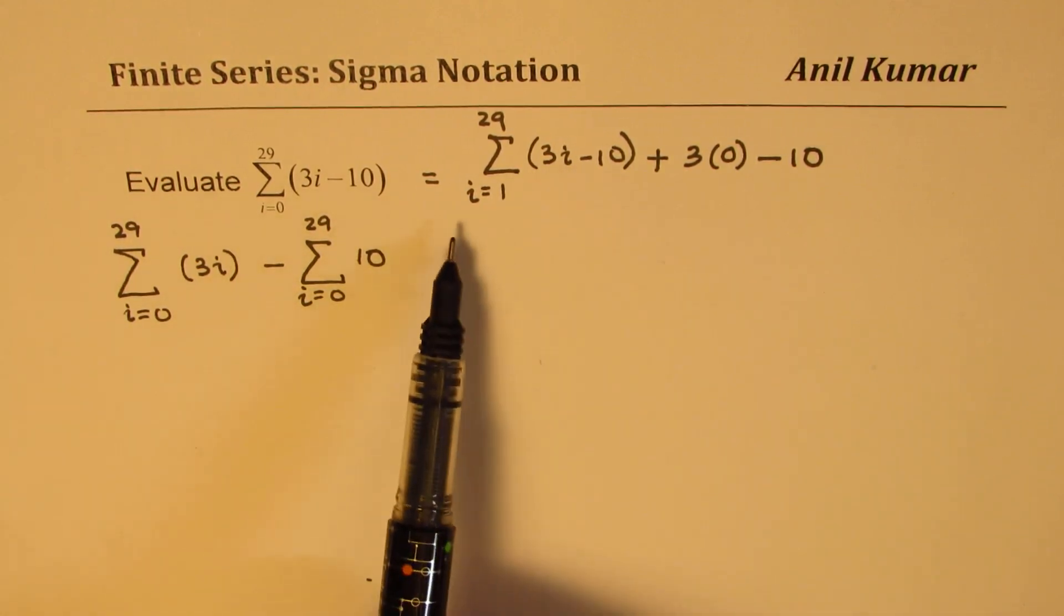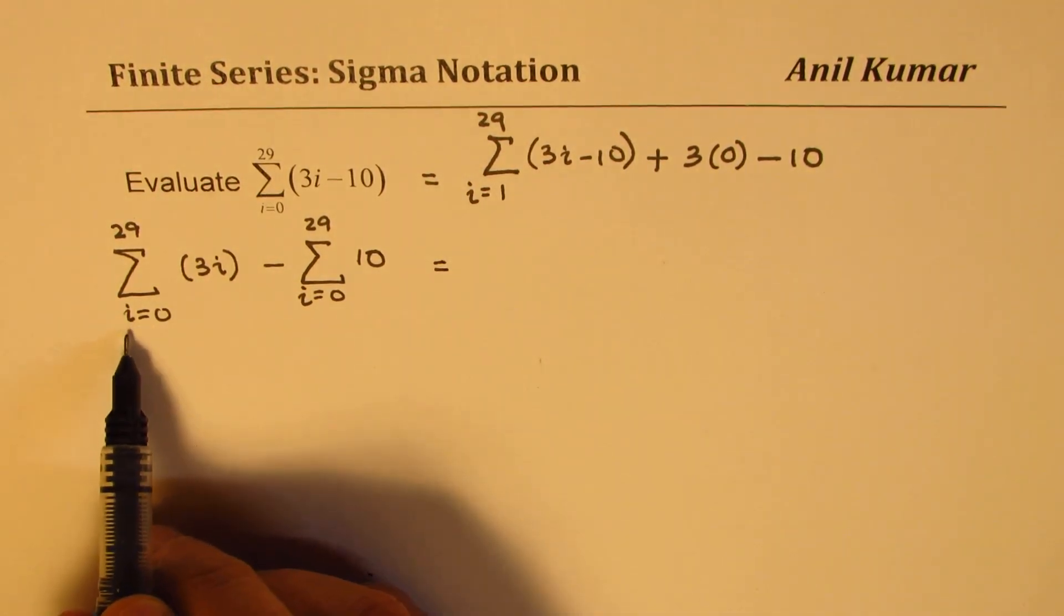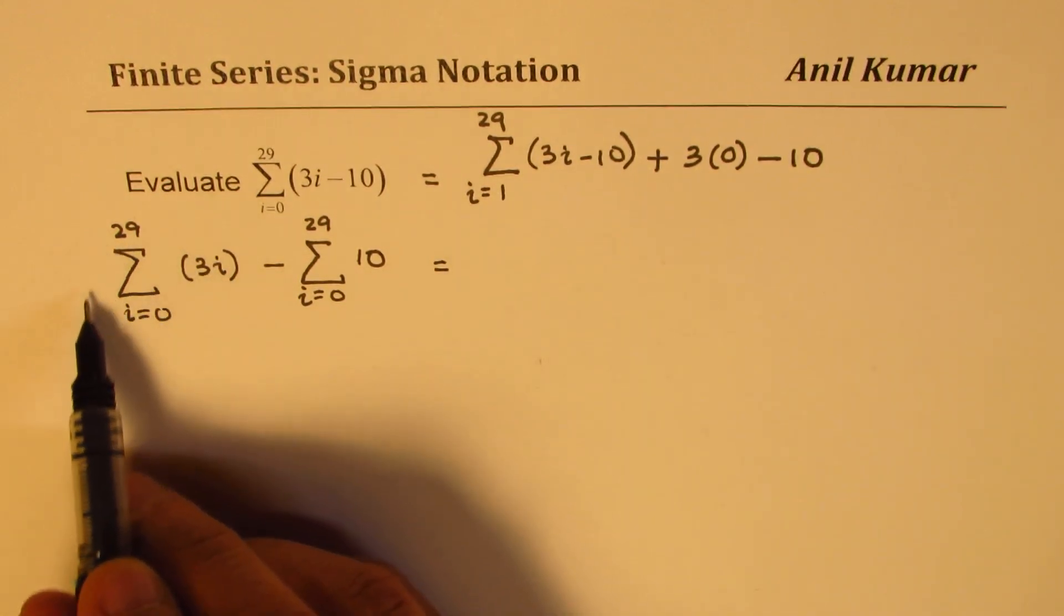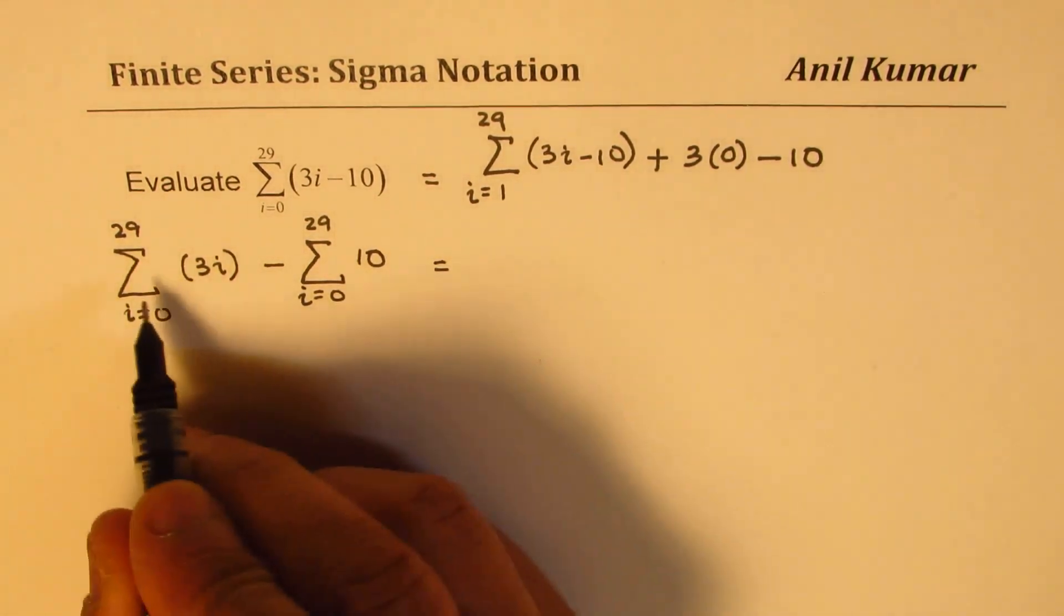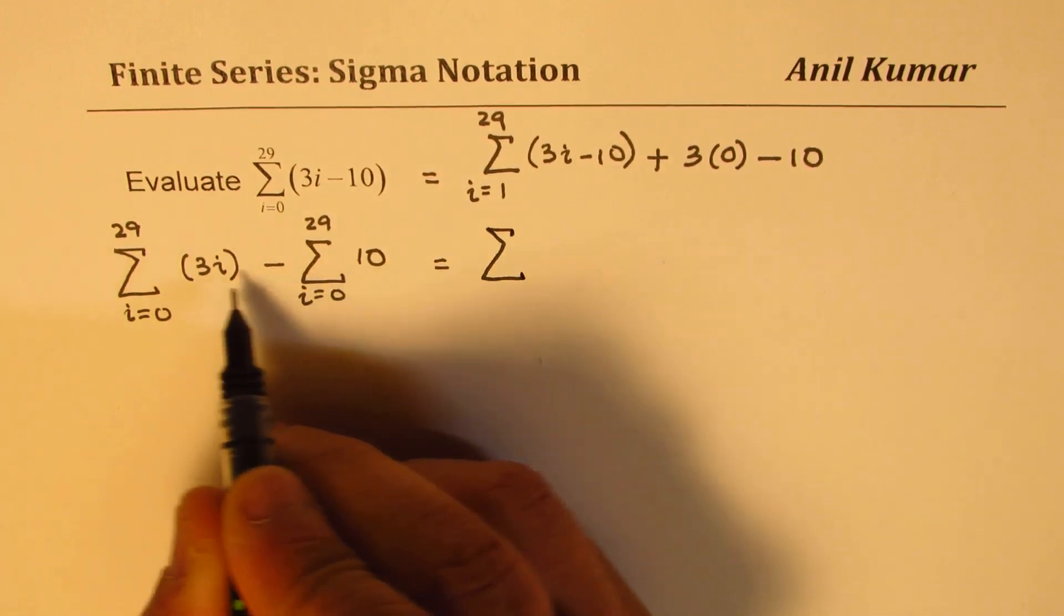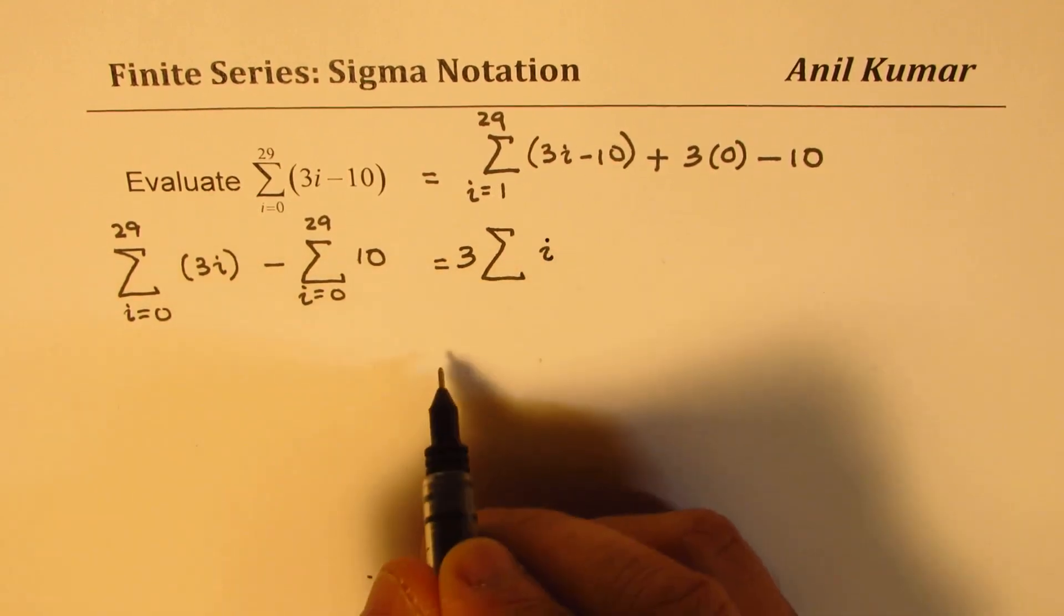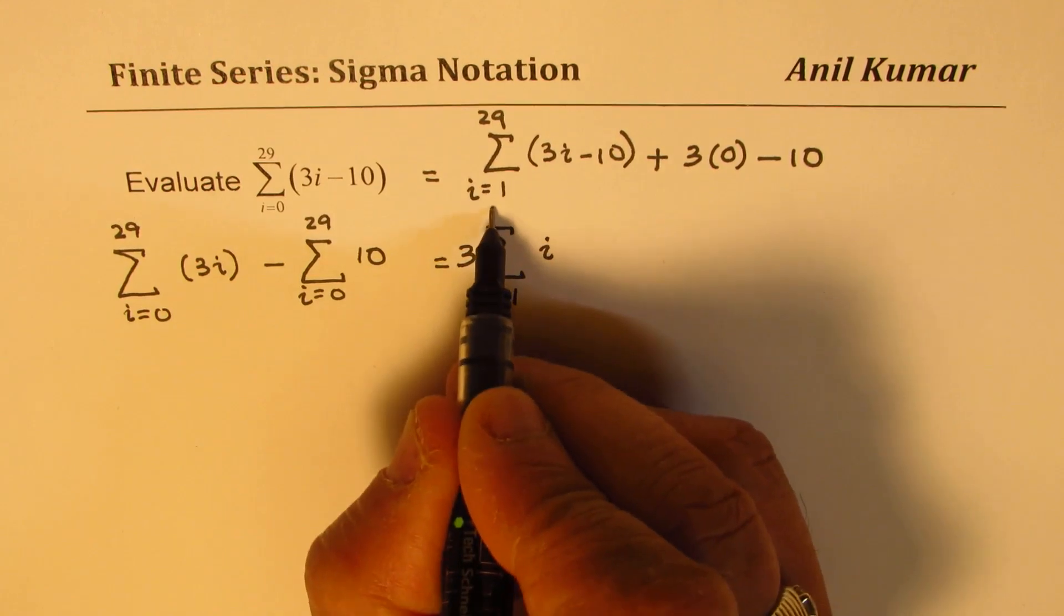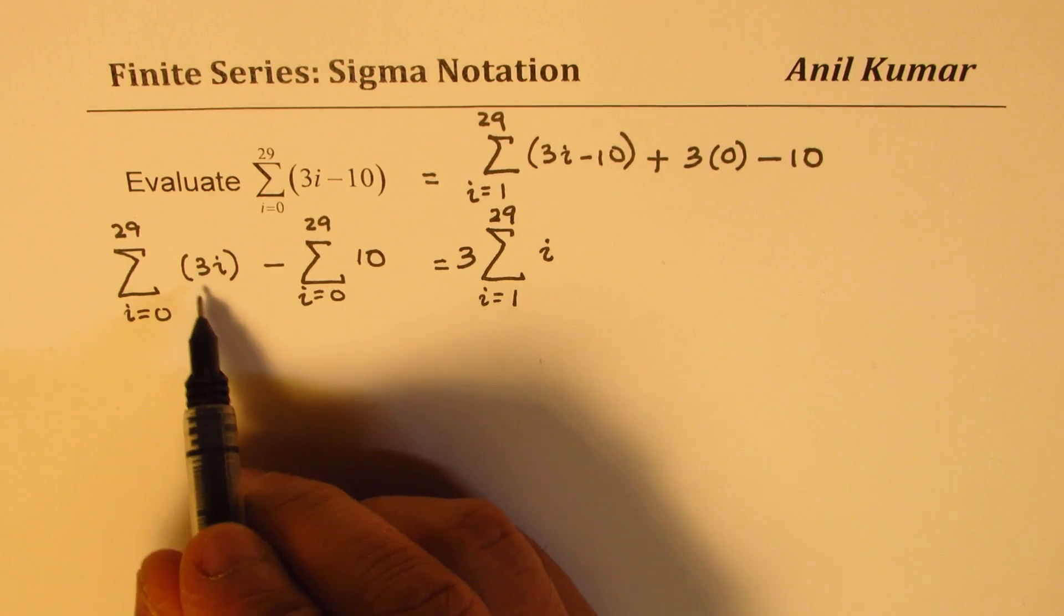So basically, what you really notice here is that when i equals to 0, 3i is 0. So I could write the first term, or you may think like this, either way. So what we have here basically is that we have 3 as a constant outside. i is what is changing its value, from 1 to 29. Since when i is 0, the value of 3i is 0.